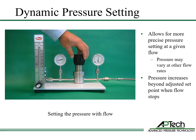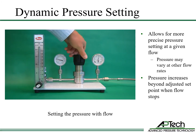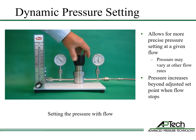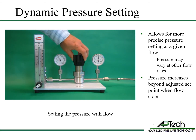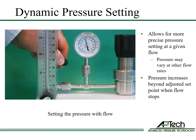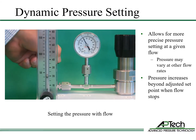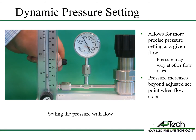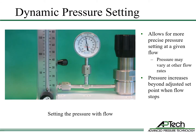Dynamic pressure setting means to set the outlet pressure with flow. This allows for a more precise pressure at a given flow. In this example, the regulator is set with a fixed flow downstream. When flow stops, the outlet pressure rises above the adjusted setpoint due to droop. If the flow rate changes later, the outlet pressure will vary.